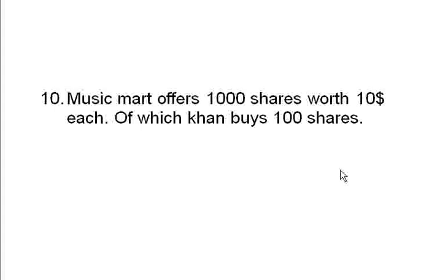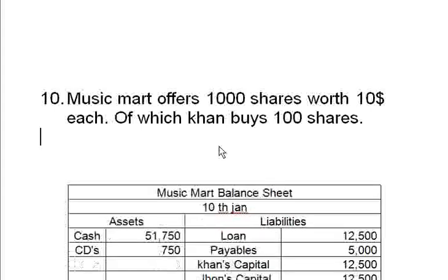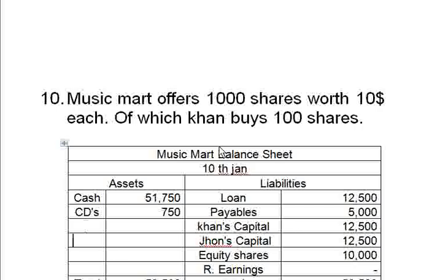Khan is one of the owners, so the owner himself is buying some shares, similar to share options given to employees. The net money the company gains is 1000 shares times $10, which equals $10,000. So the cash account of the company will increase by $10,000, and correspondingly the share capital on the right side will also increase by $10,000. You can pause the video and think about the balance sheet.